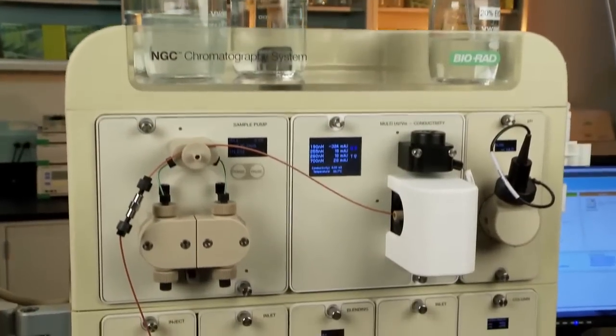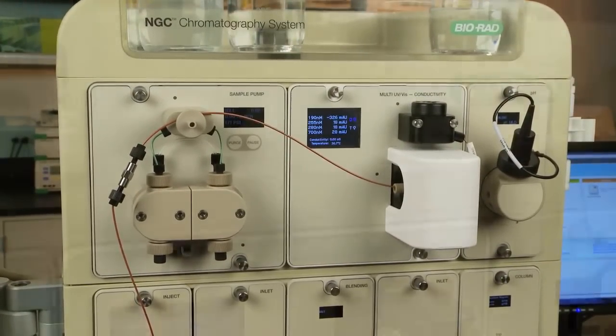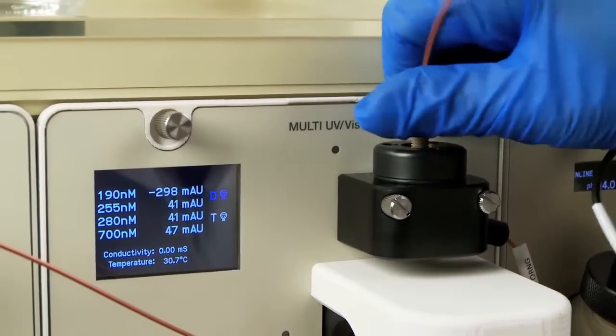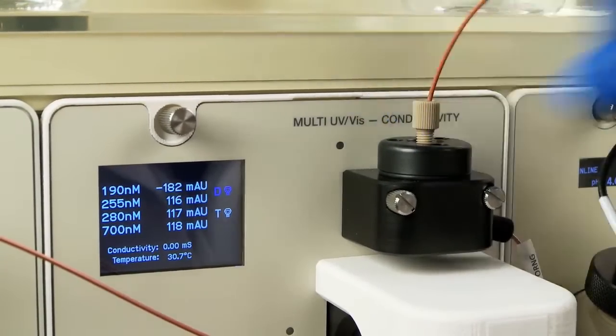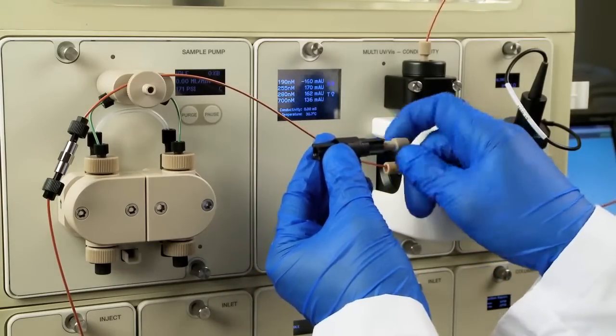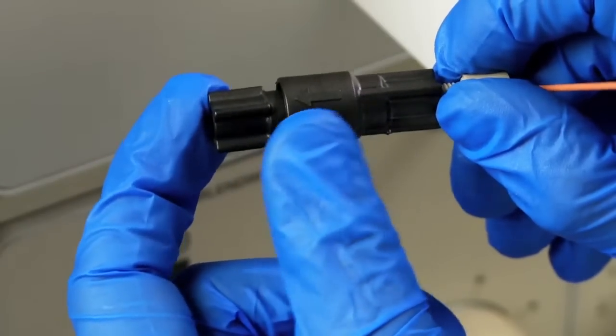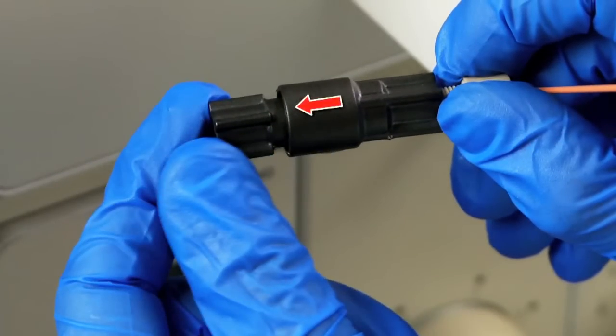Now you will attach the back pressure regulator. Connect line number 2 into the top of the conductivity monitor and then connect the other end into the 40 psi back pressure regulator. The arrow on the body of the regulator should point in the direction of flow.